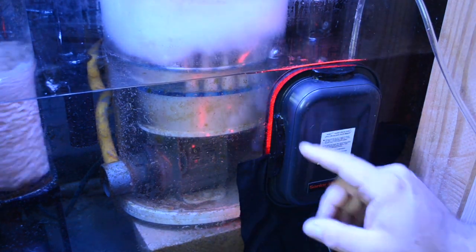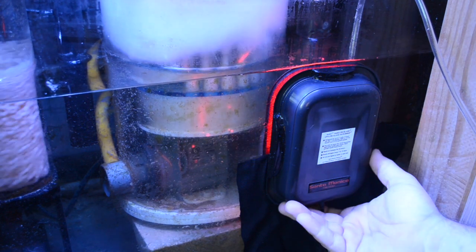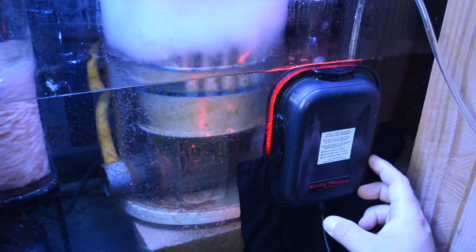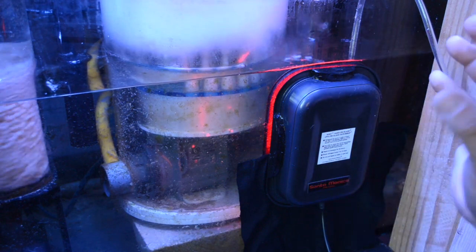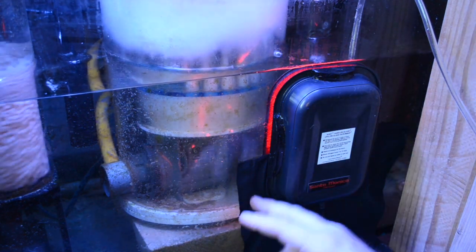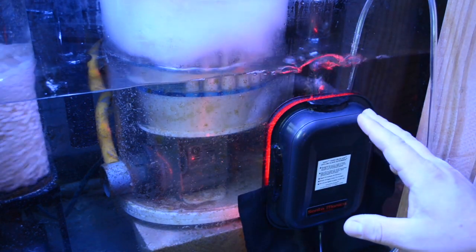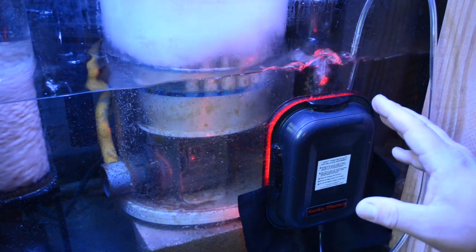Alright, so we have installed the HOG One hang-on-the-glass upflow algae scrubber from Santa Monica Filtration in my sump. I'm going to let this blackout curtain sit in there until that algae starts to grow. And what we're going to do from here is let this run for a couple of days and see how well it works.